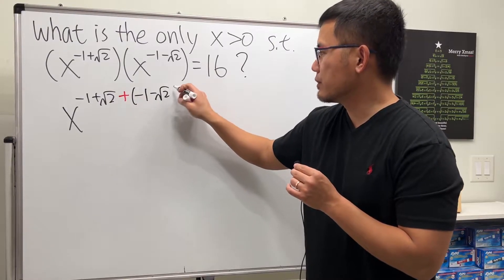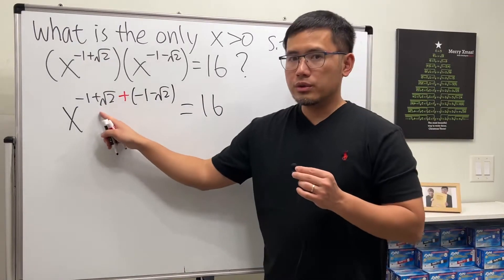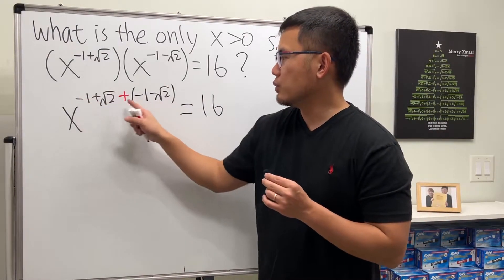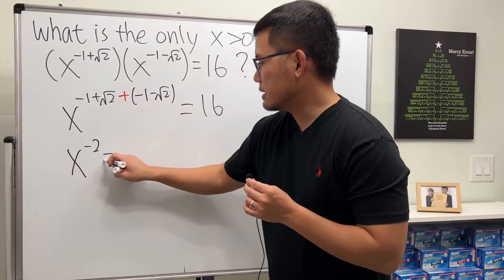That's equal to 16. Square root of two minus square root of two is just zero, negative one minus negative one, so it's x to the negative two and that's equal to 16.